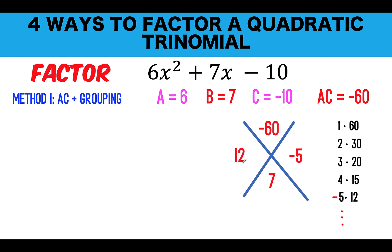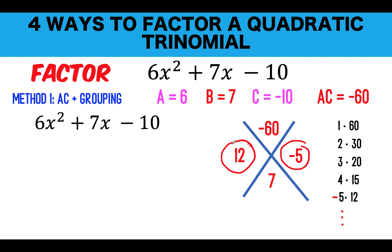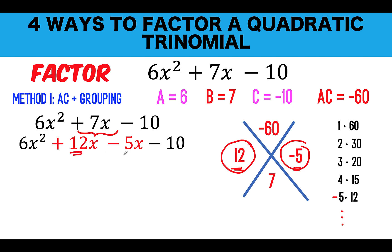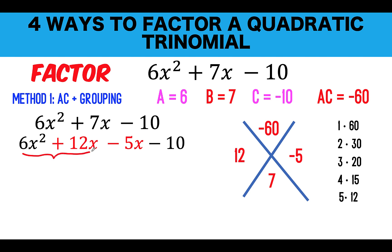Notice that negative 5 times 12 equals negative 60, and negative 5 plus 12 equals 7 — that is the combination we want. It doesn't matter whether you write 12 or negative 5 first; multiplication is commutative. Once you identify 12 and negative 5, go back to the original problem 6x² + 7x − 10, and split the middle term 7x into 12x and minus 5x.